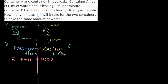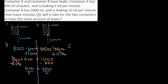We need to bring down the 800 so we don't leave it out, giving us 4M equals 1000. Now I am going to subtract 800 from both sides, since this 800 is a constant I want to move over. 800 minus 800 is zero, so the constants on the left cancel out. We are left with 4M equals 1000 minus 800, which is 200. To solve the rest of the equation, I divide both sides by 4.